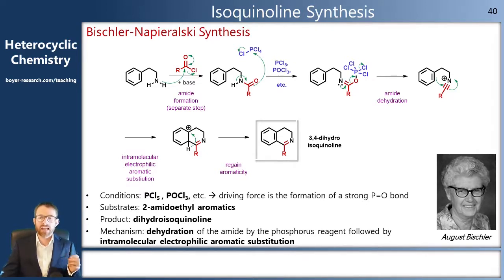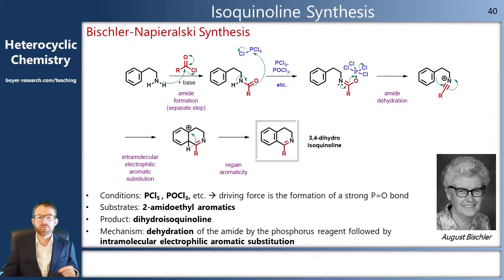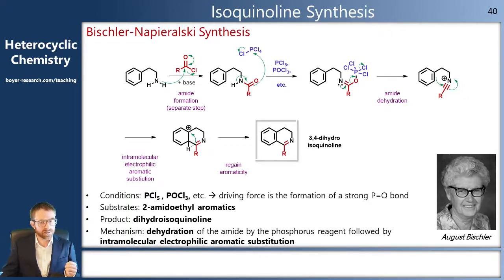We activate the amide to be a good electrophile by using one of our phosphorus reagents — something like PCl3, POCl3, or PCl5. The driving force is that phosphorus wants a strong phosphorus-oxygen double bond. Our amide reacts through the oxygen to make a new oxygen-phosphorus single bond, then the lone pair breaks the carbon-oxygen bond to give us that phosphorus-oxygen double bond and generate our positively charged electrophile. This is even better at breaking the aromatic system.